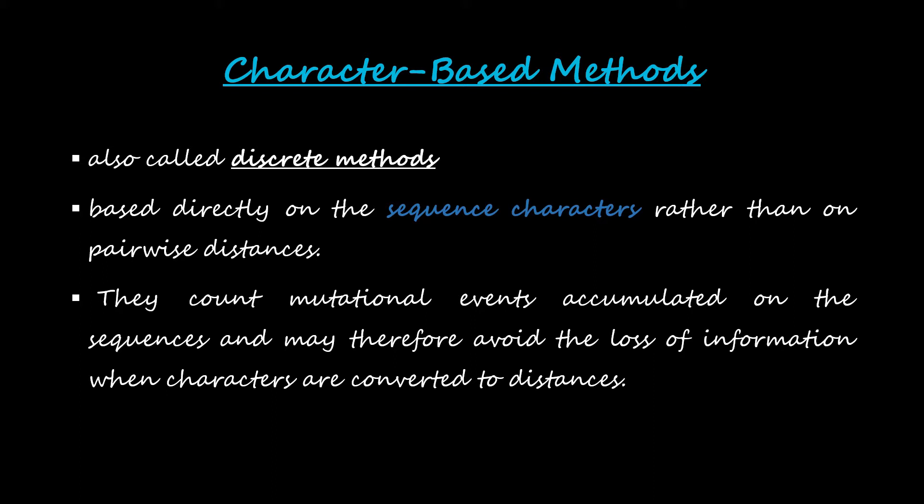Character-based methods count mutational events accumulated on the sequences and therefore avoid the loss of information that occurs when characters are converted to distances. When there is any mutation in a sequence, it gets accumulated and is passed on to subsequent generations. All of these things are accounted for by character-based methods, and we are not losing any information because we are not converting sequences into distances.